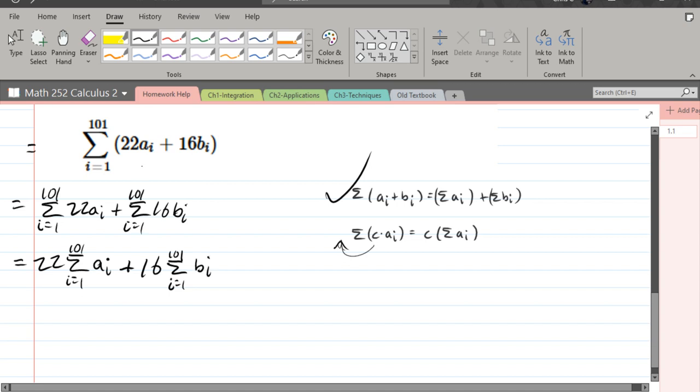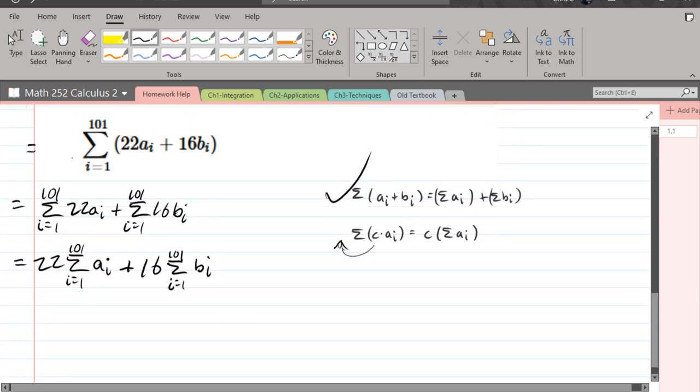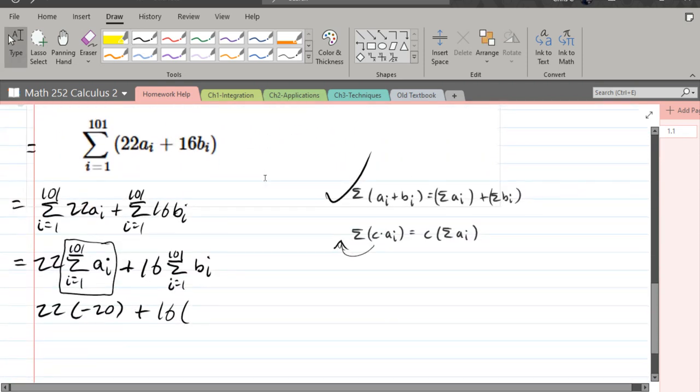And now we know these sums because the problem told us that you add up all the AIs, you get negative 20. Add up all the BIs, you get positive 19. So we're going to sub that in. So right here, that was negative 20. So we've got 22 times negative 20, plus 16 times, the other sum is 19.